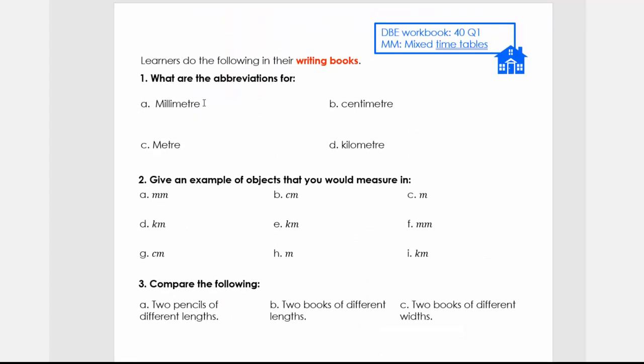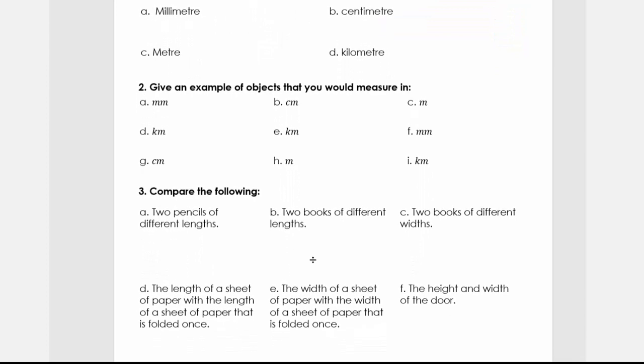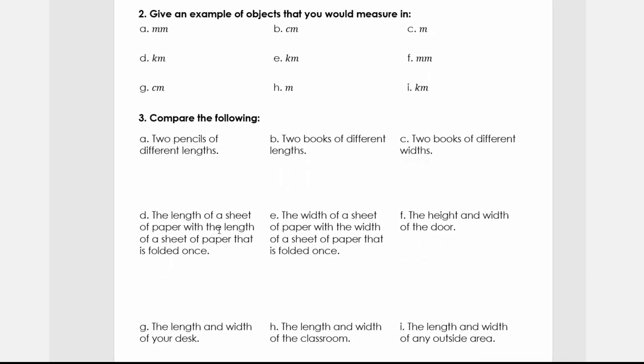The next step is the worksheet. First, we start with the abbreviations, then give examples of objects that we measure in millimeters, meters, centimeters, and kilometers. Then you're going to do a practical activity. If you don't have some of these things, you can replace them with whatever you have available.